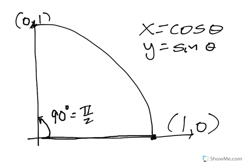Now I know the sine and cosine of a 90-degree angle, or π over 2. The cosine of π over 2 is 0, and the sine of π over 2 is 1.